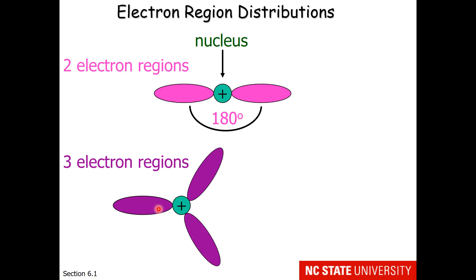For an atom with three electron regions, it still maintains a flat structure, and the furthest three electron regions can get away is 120 degrees.